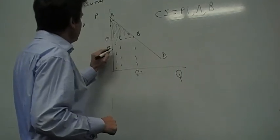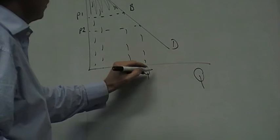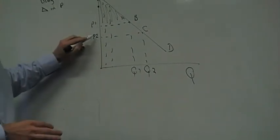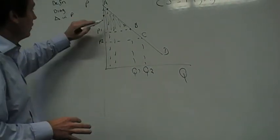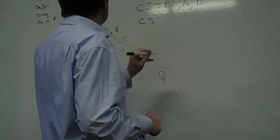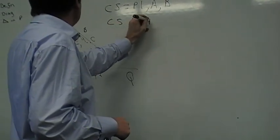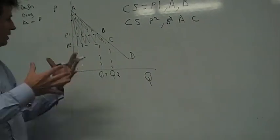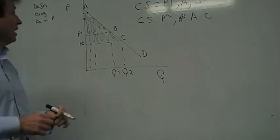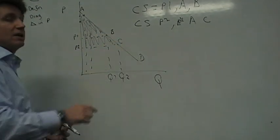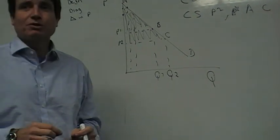Let's have a new price: P2. We can see that the area of consumer surplus has increased — the area above the equilibrium price but below the demand curve. Our new area of consumer surplus is P2AC. With this reduction in price, consumer surplus has increased, and the area of increase — the change — has been P2, P1, BC. That basically describes consumer surplus.